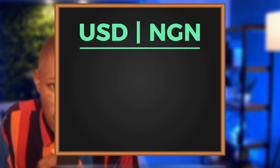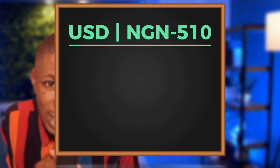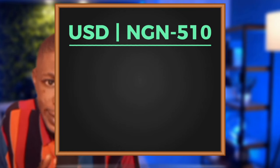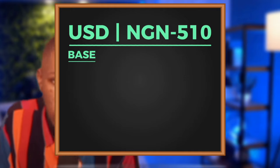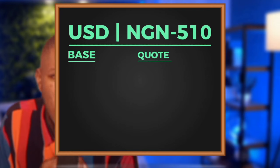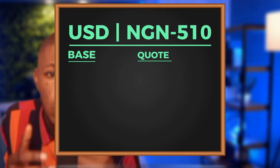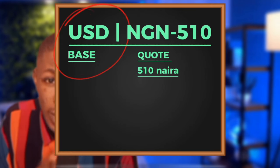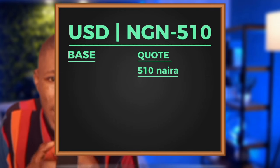Let me use a local example to illustrate this. If you have a currency pair between USD and Naira, it will be written as USD/Naira. Let's use 510 as the exchange rate. This is first telling you that USD is stronger than the Naira — hence USD is the base and Naira is the quote. It is then telling you how many quote currencies you need to get one unit of the base currency — in this case, you will need 510 Naira to get one USD.